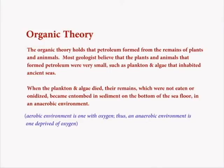Did you ever wonder where oil and gas came from? One theory is the organic theory. The organic theory holds that petroleum formed from the remains of plants and animals. Most geologists believe that plants and animals that formed petroleum were very small, such as plankton and algae that inhabited ancient seas. When the plankton and algae died, their remains, which were not eaten or oxidized, became entombed in sediment on the bottom of the seafloor.